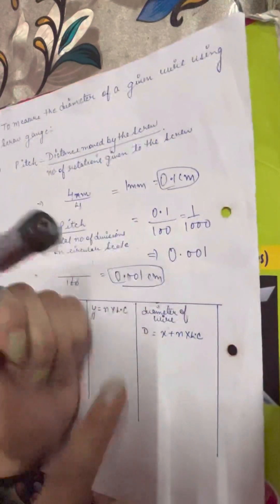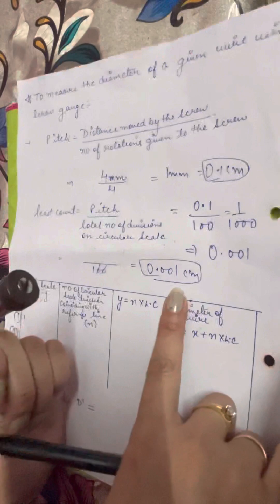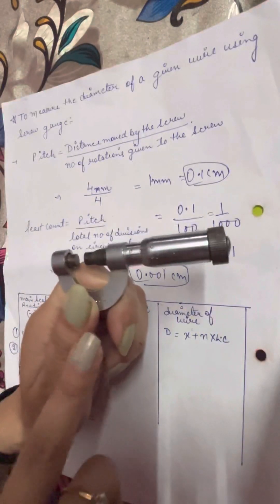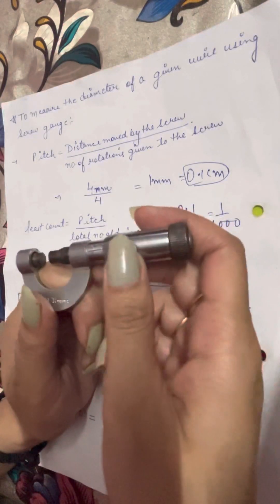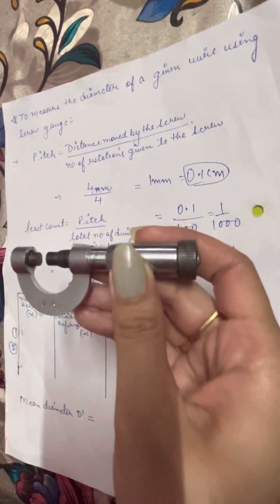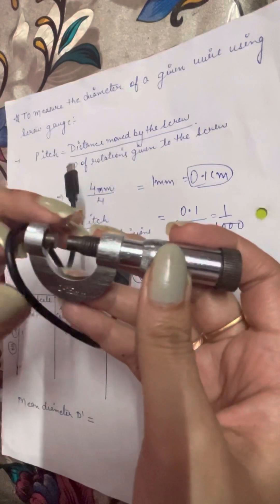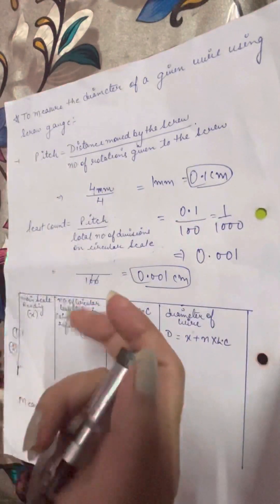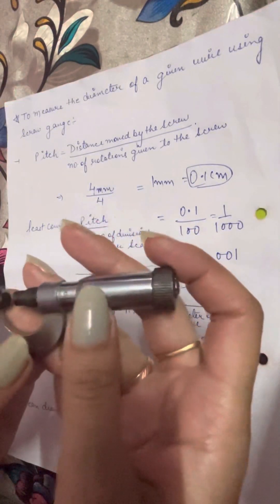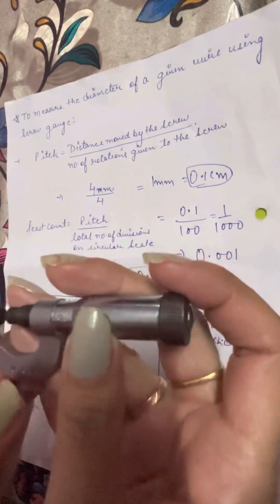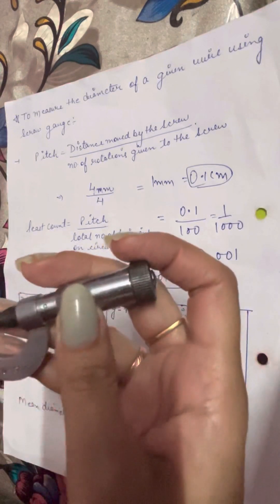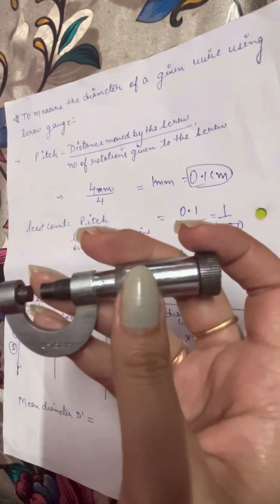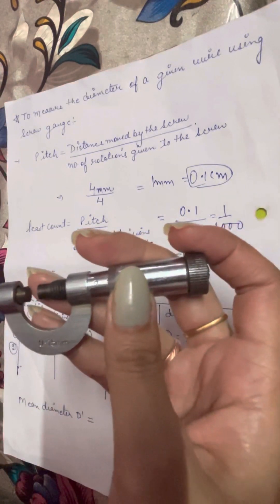We have found both the pitch and the least count of the screw gauge. In the next video we will perform readings to find the diameter of a wire using the screw gauge. Thank you, and if you want more videos like this, please subscribe and like my channel.